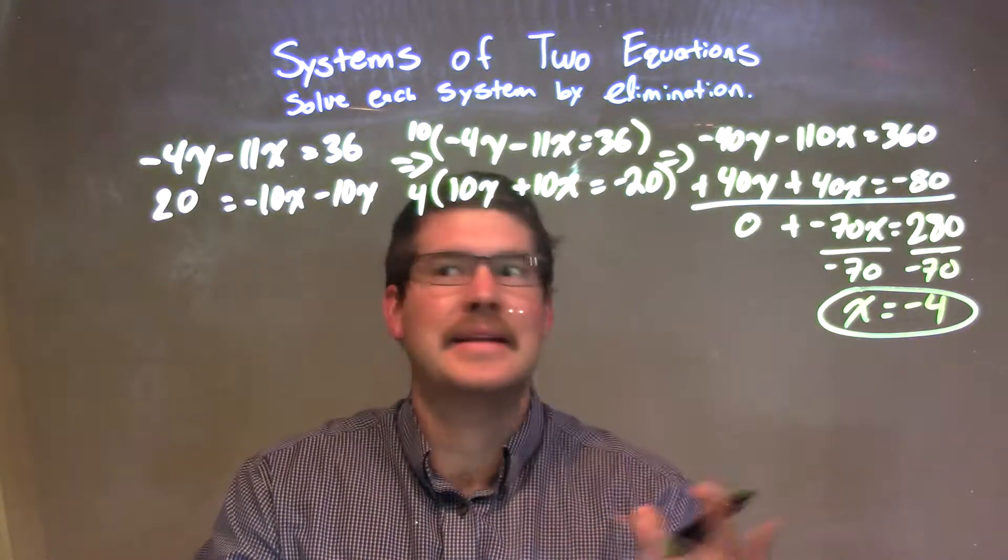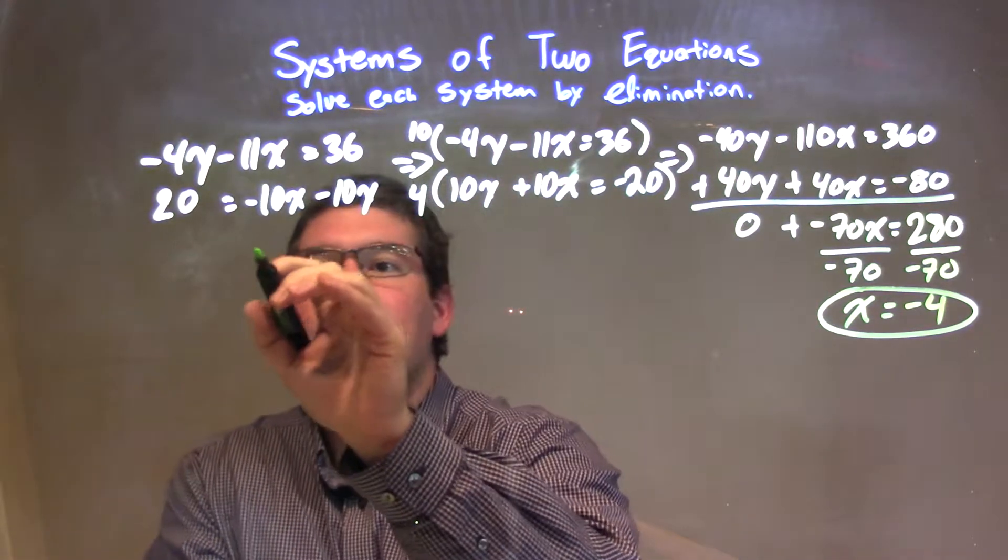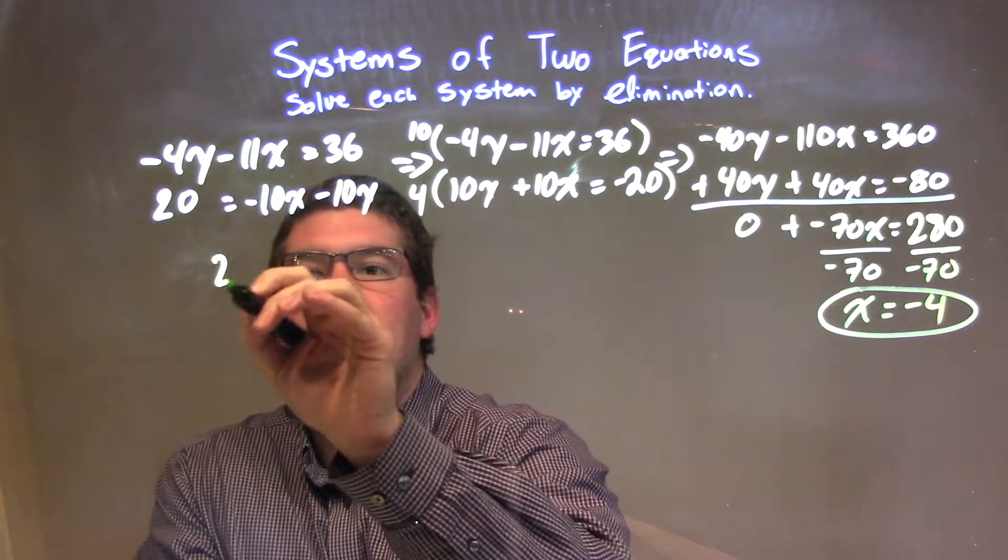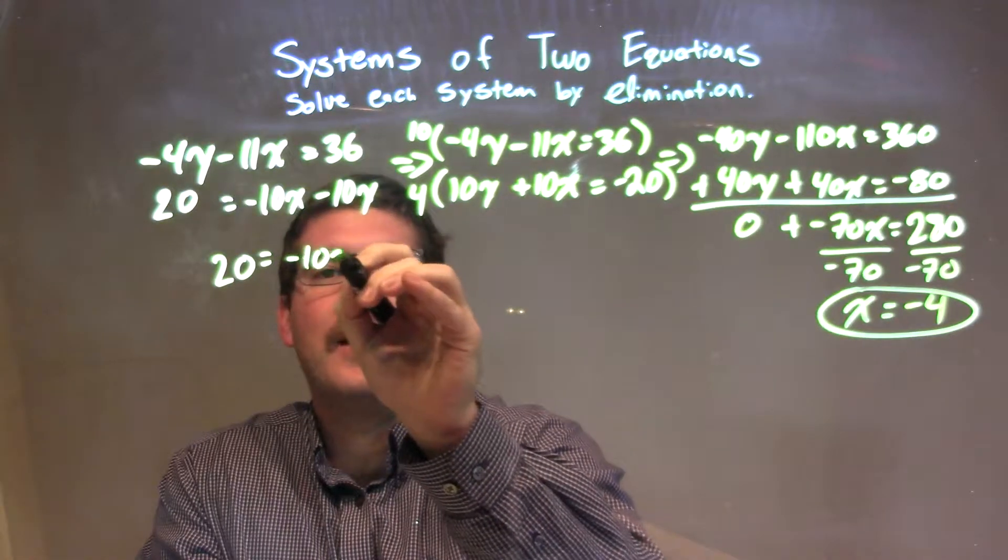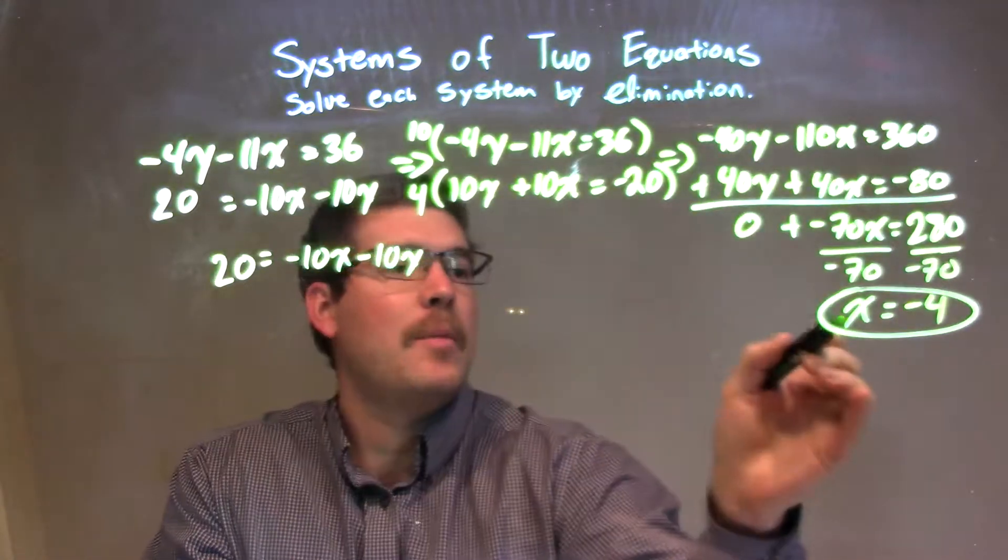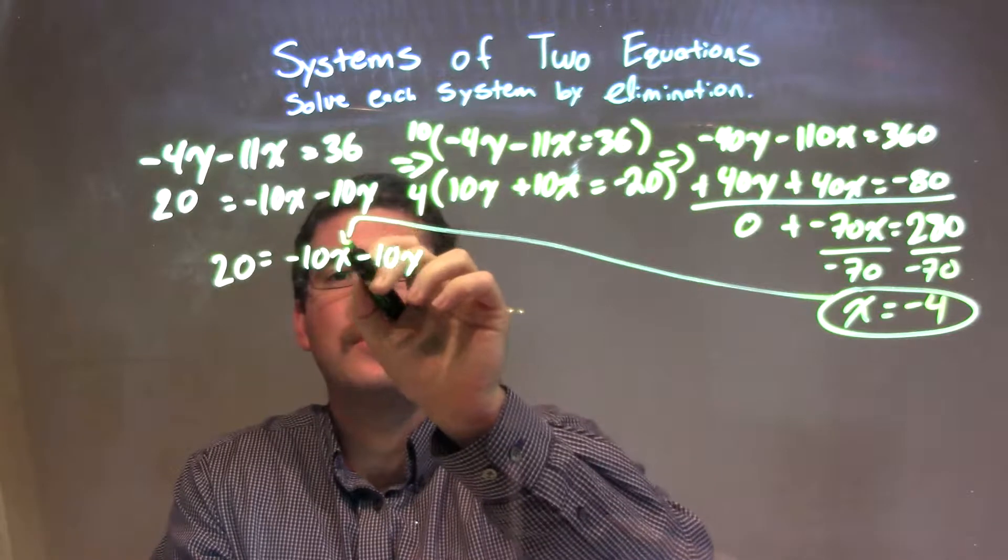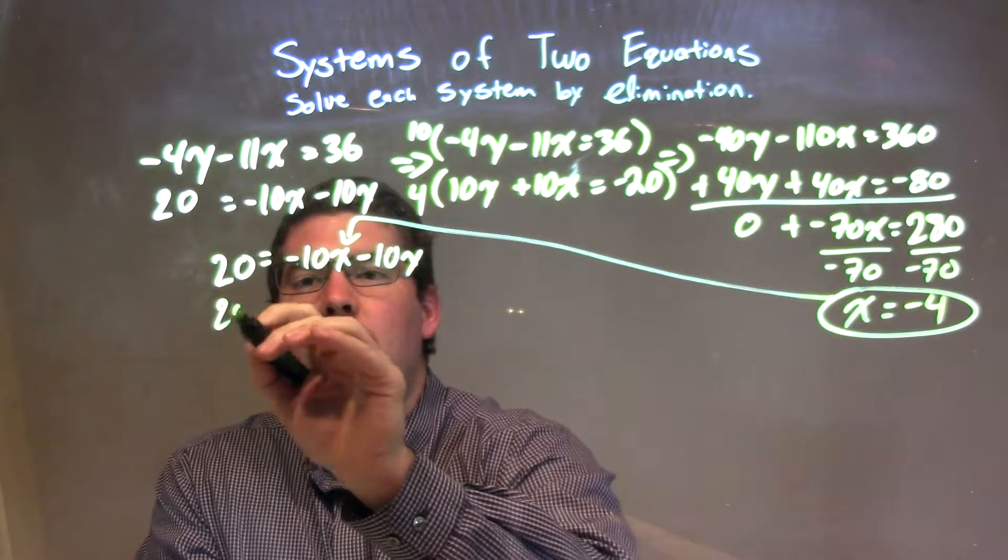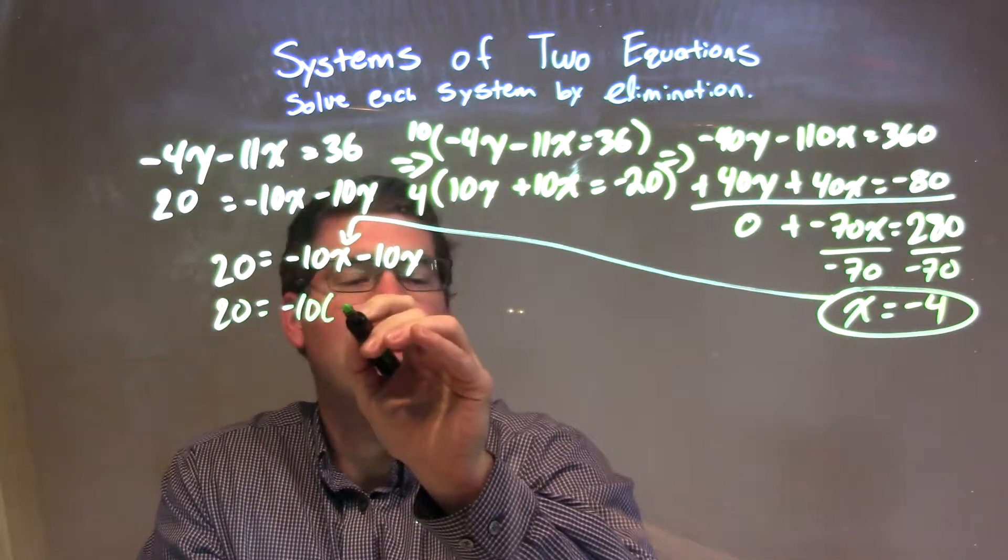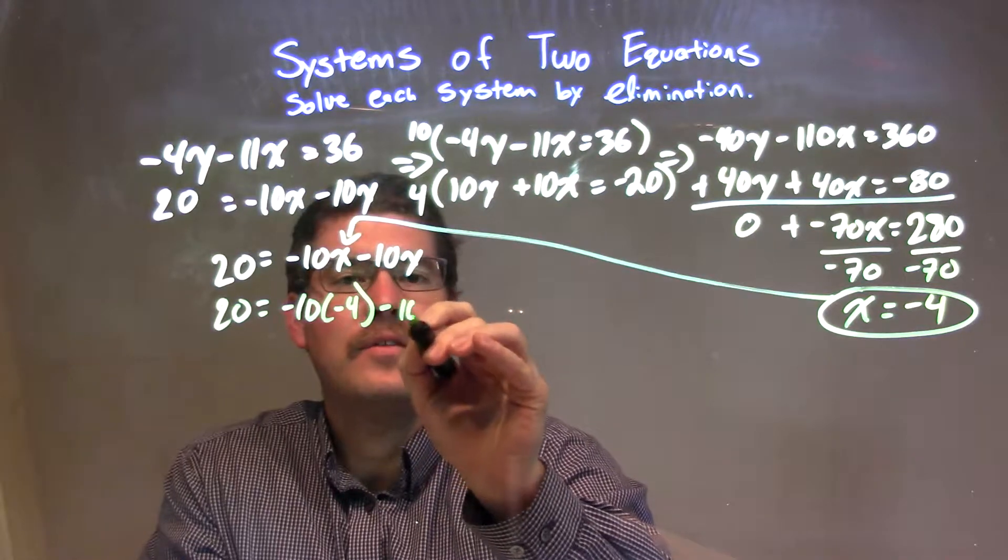Let's pick the second equation. I'm going to rewrite that down here. 20 equals negative 10x minus 10y, and I'm going to plug in this knowledge that x is negative 4. So we have 20 equals negative 10 times negative 4 minus 10y.